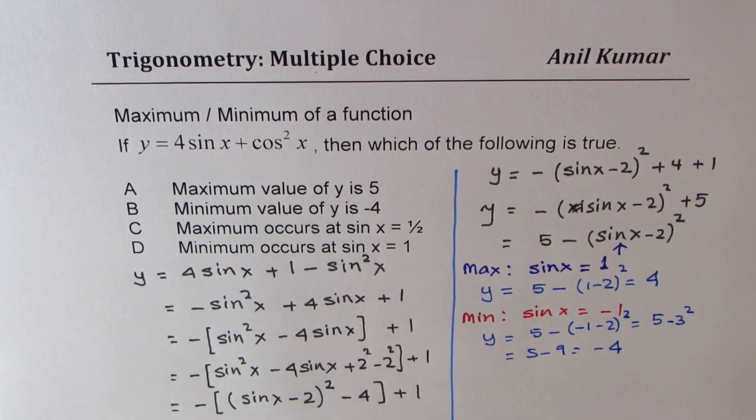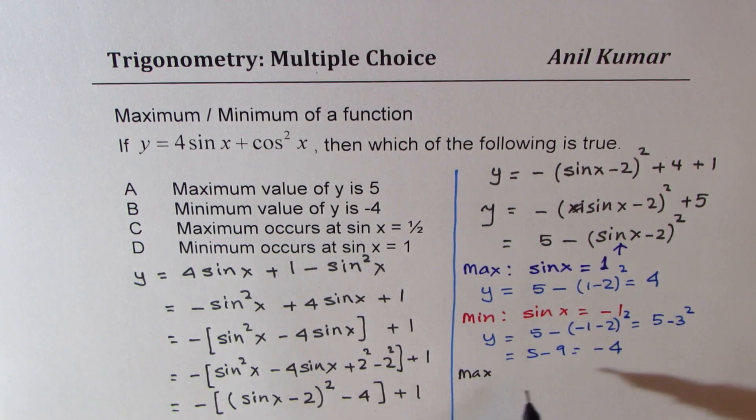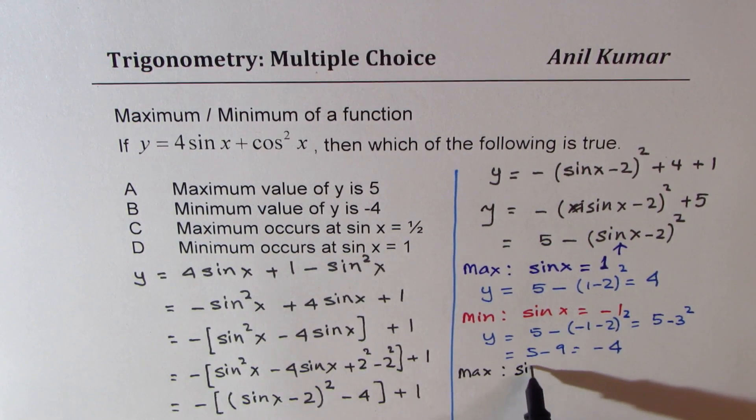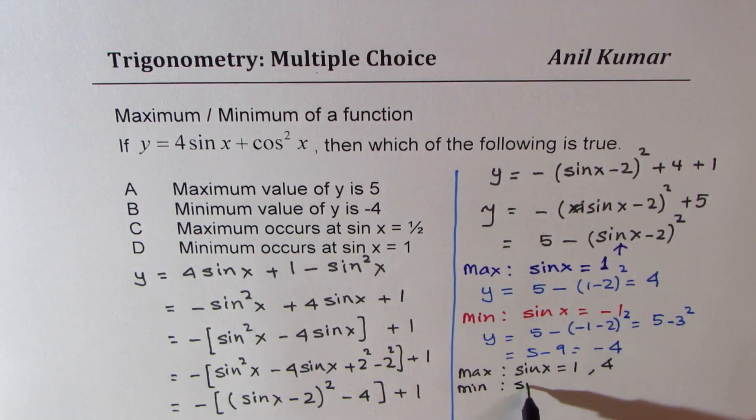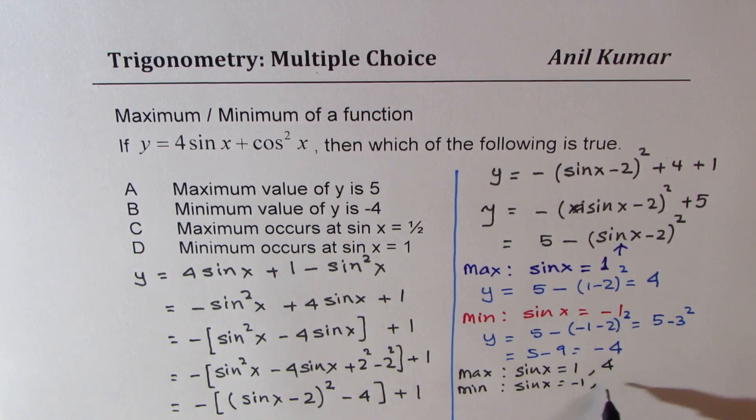So from here, we do get two results, which is we get maximum when sin x equals 1 and the value is 4. And as far as the minimum is concerned, we get it when sin x is equals to minus 1 and the value is minus 4.